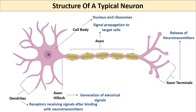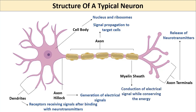There is a significant problem with conducting an electrical signal: the danger of losing energy or voltage over long distances. The biological system addresses this by wrapping the axon with a multi-layered modified plasma membrane called the myelin sheath, which helps in efficient conduction of electrical signals while conserving energy.